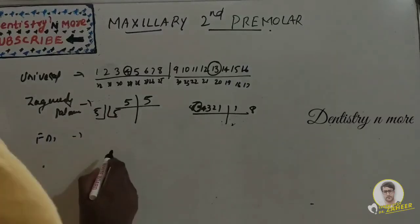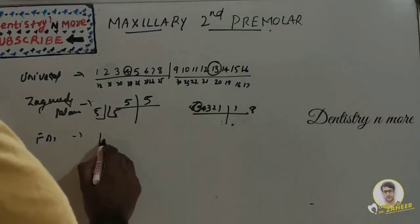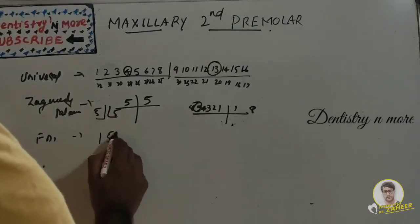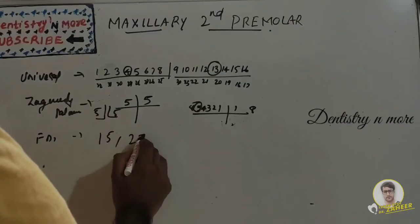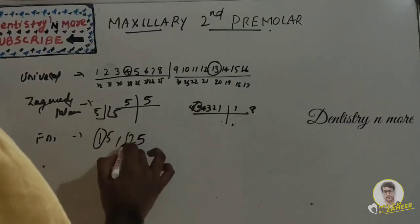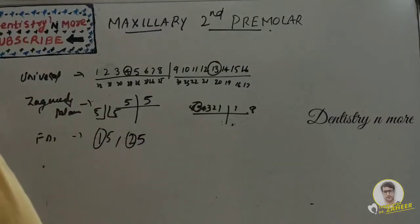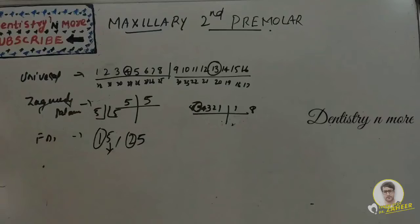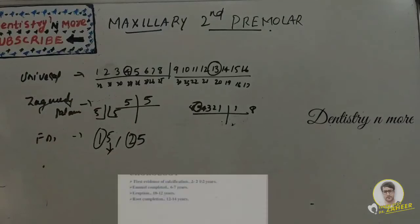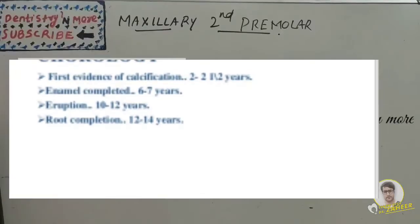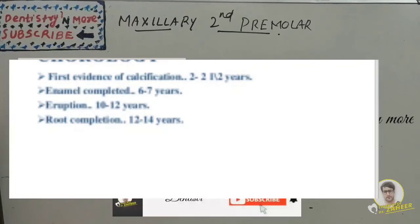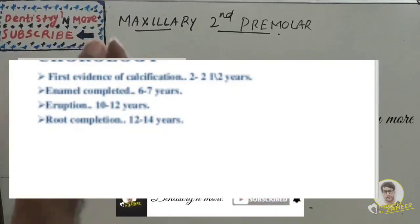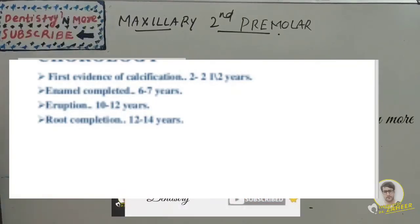In the FDI system it will be 15 and 25, where 1 and 2 represent the quadrant and 5 is the tooth number in each quadrant. Now we have the chronology — the first evidence of calcification is at 2 to 2.5 years.